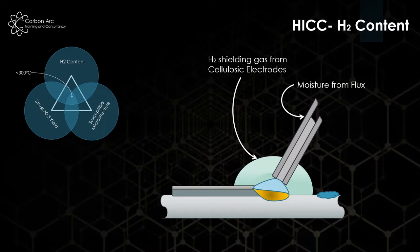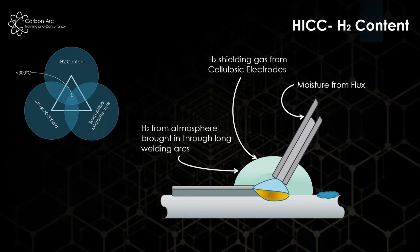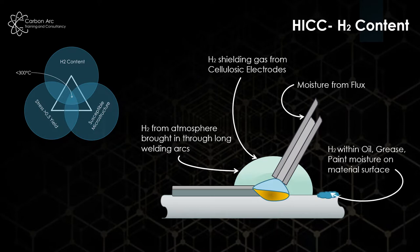We also get moisture in our fluxes, so we are introducing water which of course has hydrogen in it. We have moisture, water, and hydrogen in the air, so the longer welding arcs we have, the more chance we have of mixing atmosphere into the welding arc. We also have oils and greases, paints, and contamination on the plate surface.